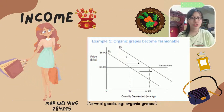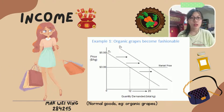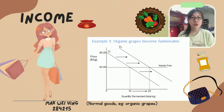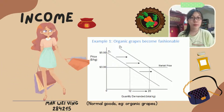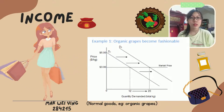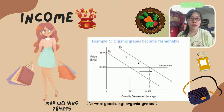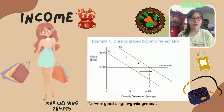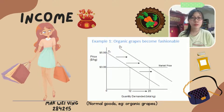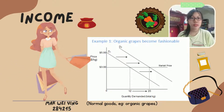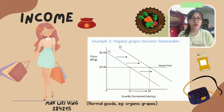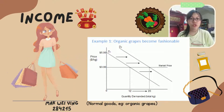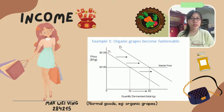One factor that causes a shift in the demand curve is income. This divides goods into two types: normal goods and inferior goods. Normal goods include organic fruits, vegetables, branded shoes and bags, and fine dining. For example, with a fixed market price of $3, the quantity demanded for organic goods increases from 12 to 20 units when people's income increases, as they become more aware of health and quality of life.